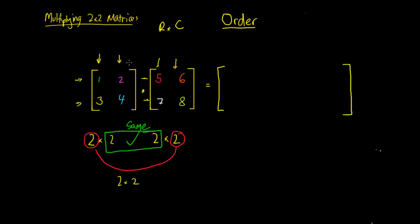When we are multiplying matrices together it's quite complex and tricky the first time you do it, but we're going to do this example slowly. When we are multiplying a 2 by 2 with another 2 by 2, we're taking our rows and multiplying them by our columns — taking each number in our rows and multiplying it with the corresponding number in a column.